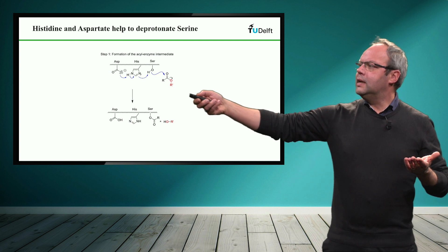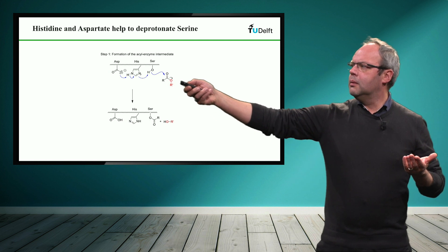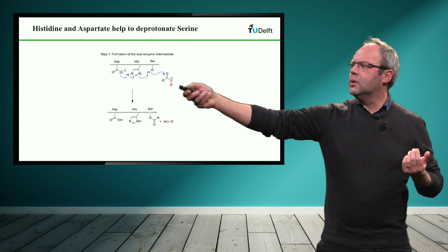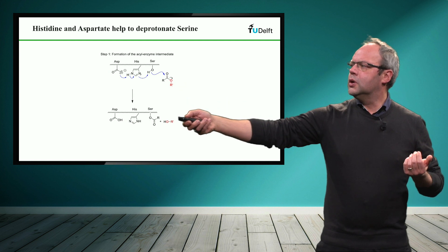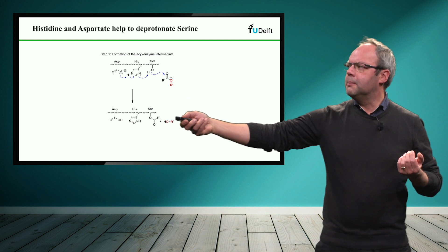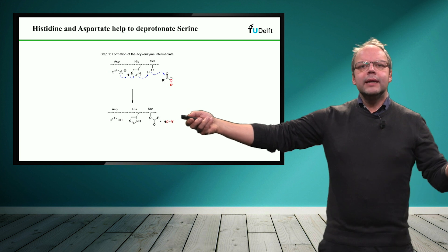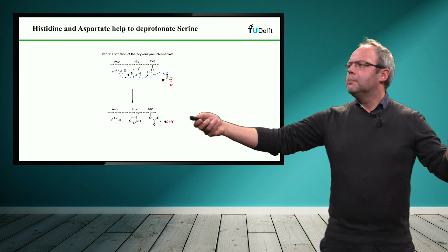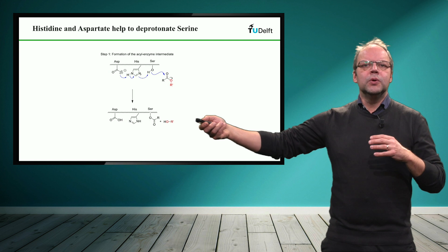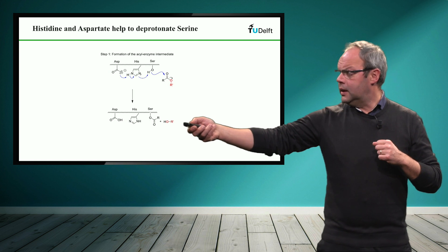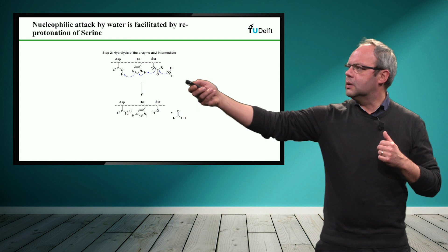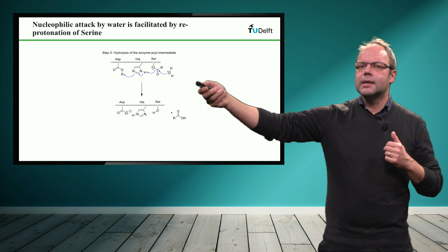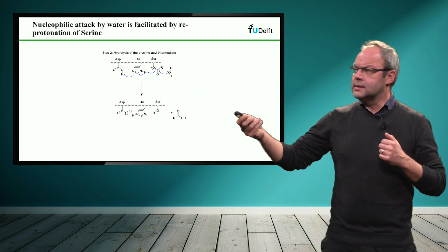So with this we cleave the original ester moiety. We get the internal covalent ester with the enzyme. And in order to complete the reaction, basically we just need to reprotonate it. So in order for water to attack, so here we want water to attack this covalent ester with the enzyme.